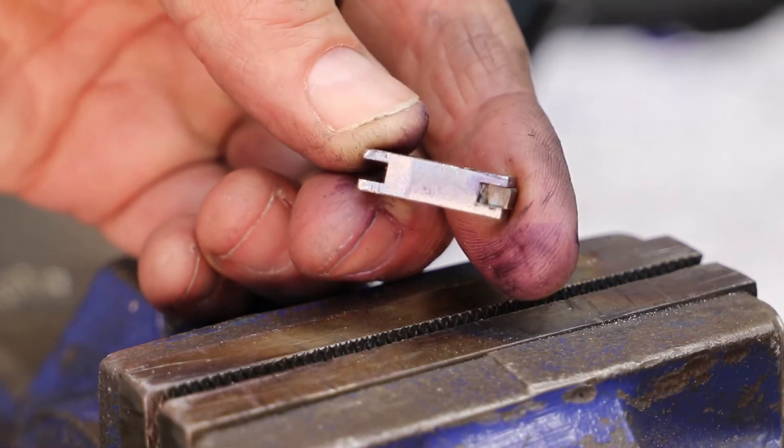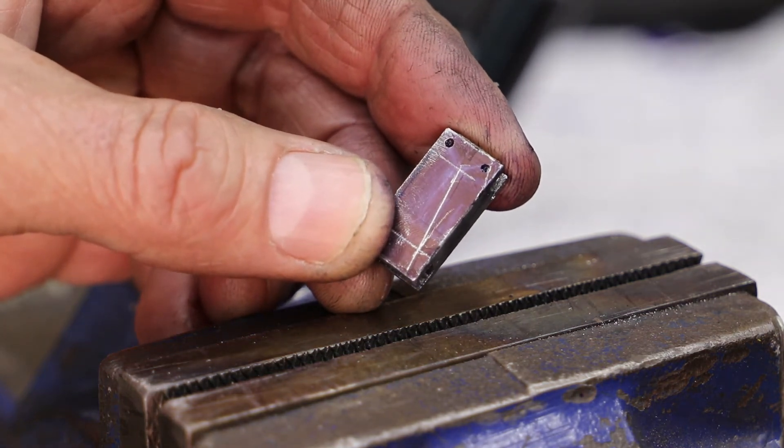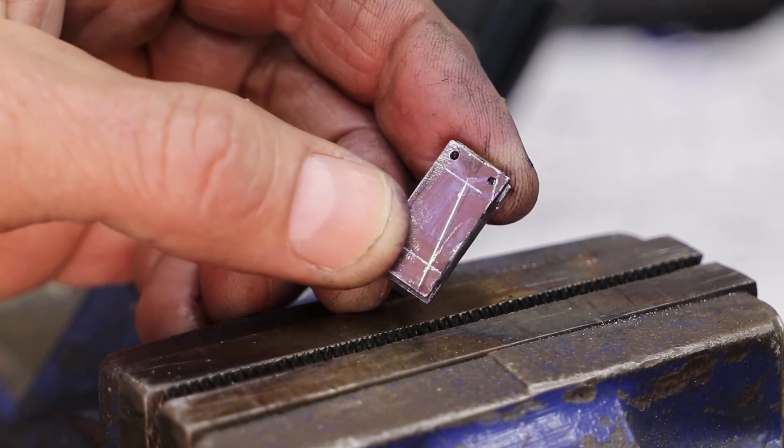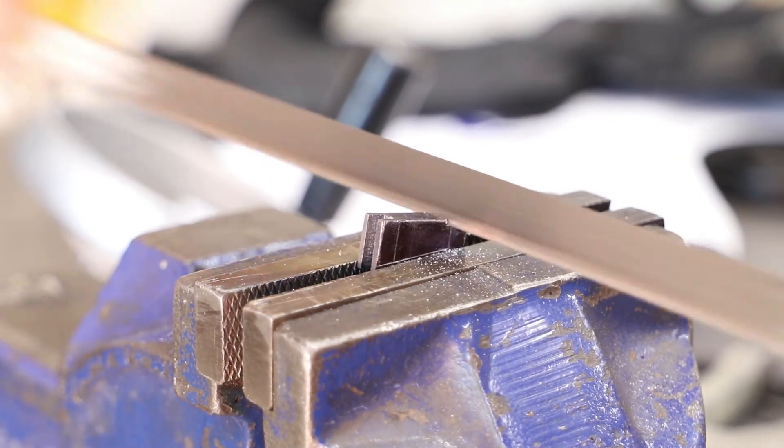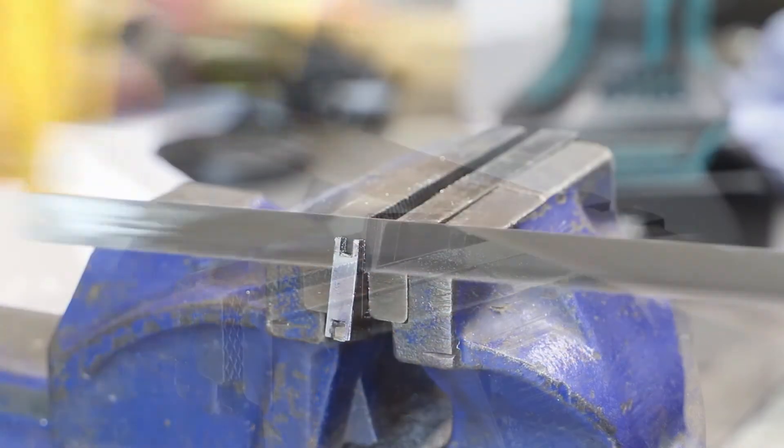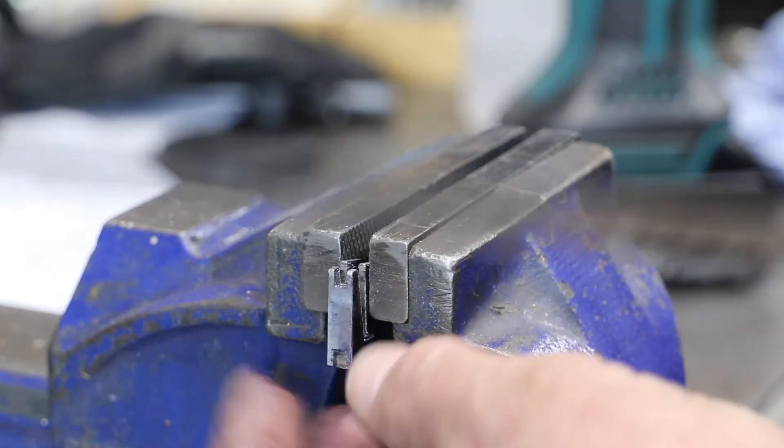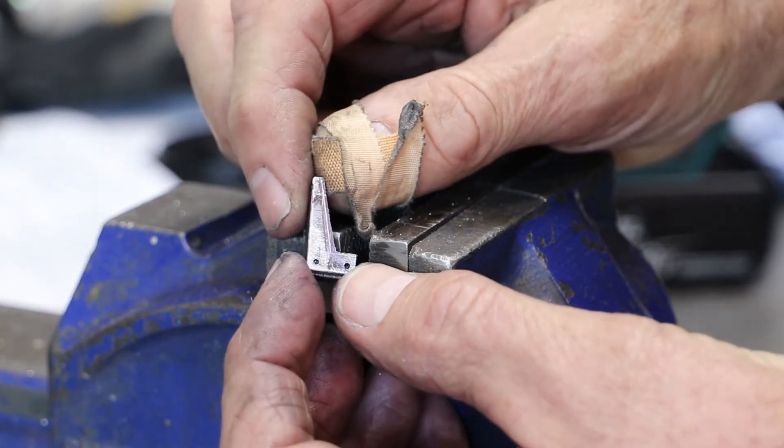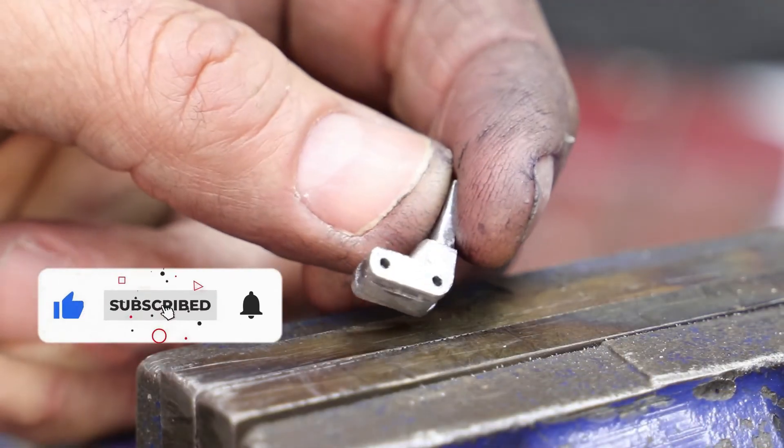From here onwards it's a case of working with a hacksaw and some files. You may notice in the block here that there are slots at both ends. That's because I rather stupidly cut the first slot at the wrong end. Luckily I've just got enough material to get away with it and not have to start again. I also Loctited into the slot a small piece of 3.2mm plate just to give it some protection whilst I'm clamping it in the vise. With the outline rough cut, it was a case of moving on to the files, working slowly towards something that looks half decent.